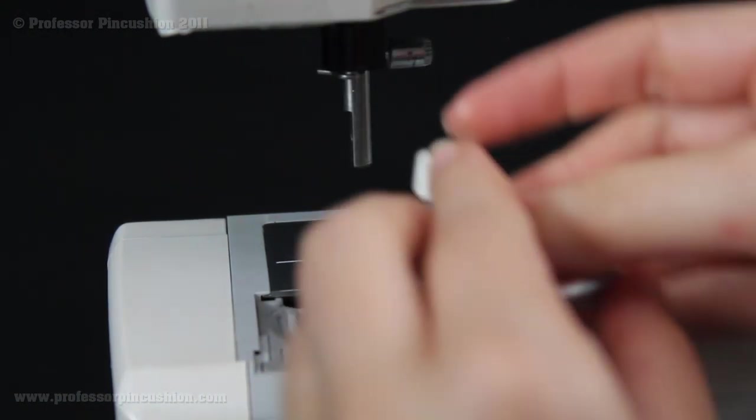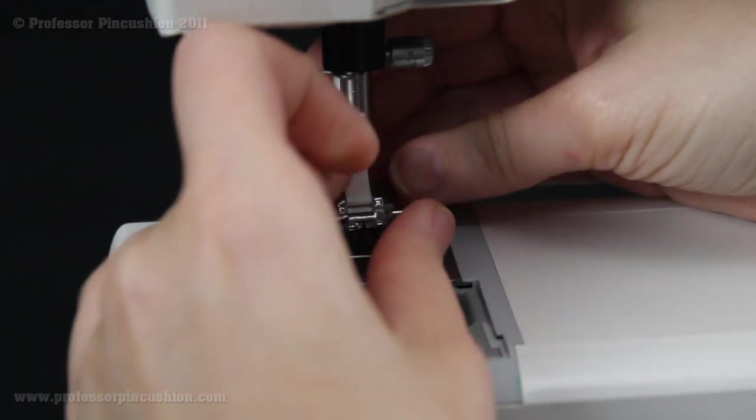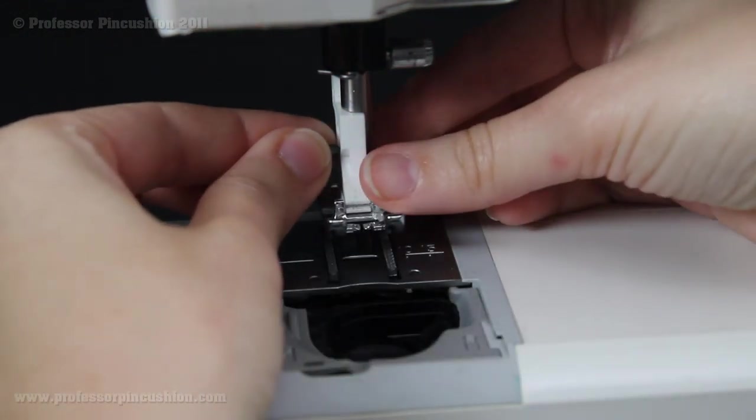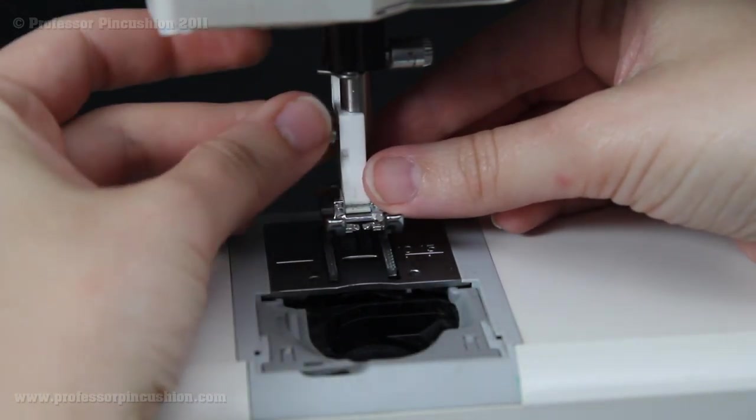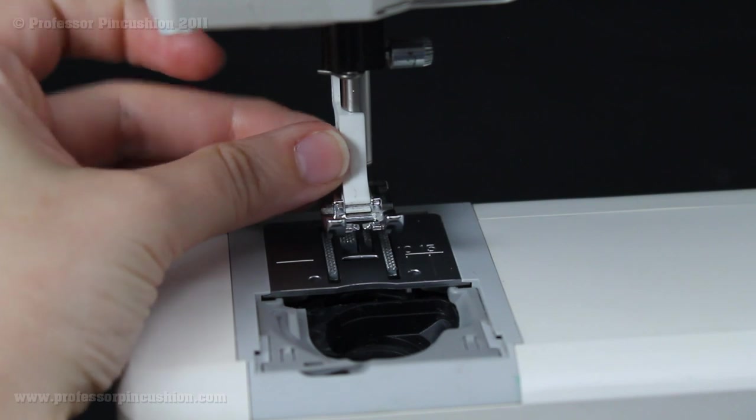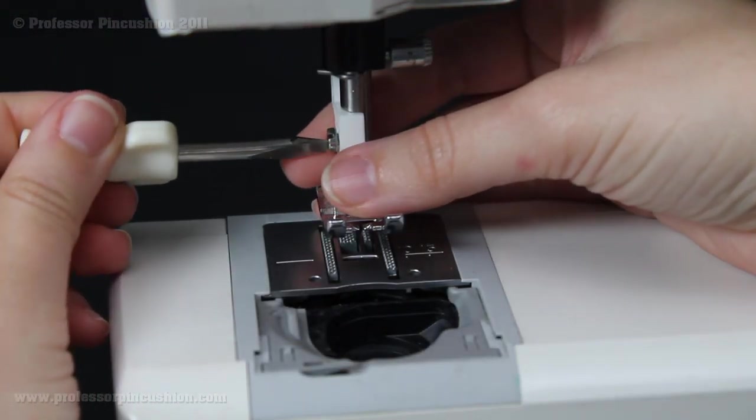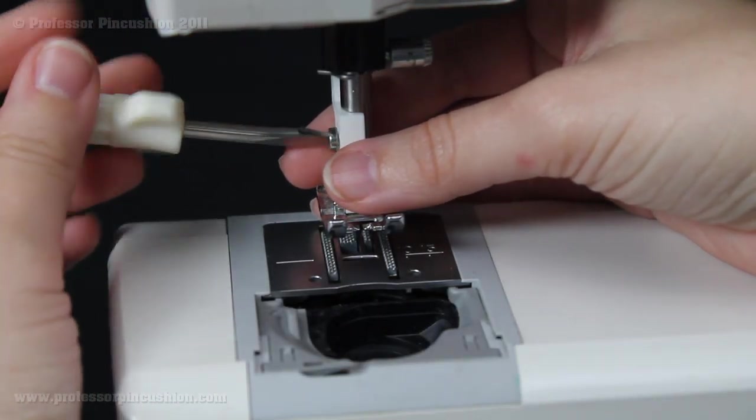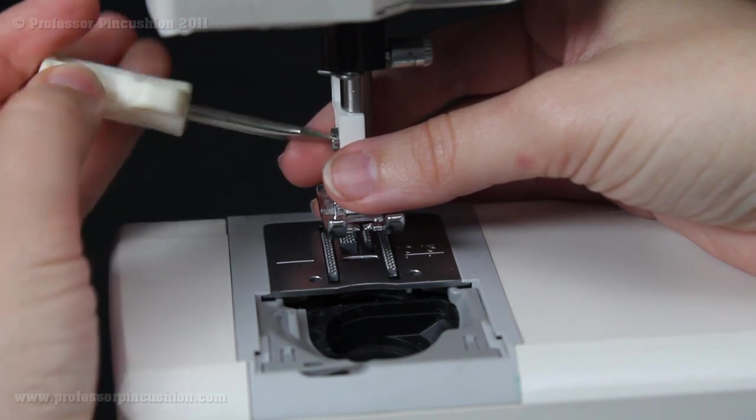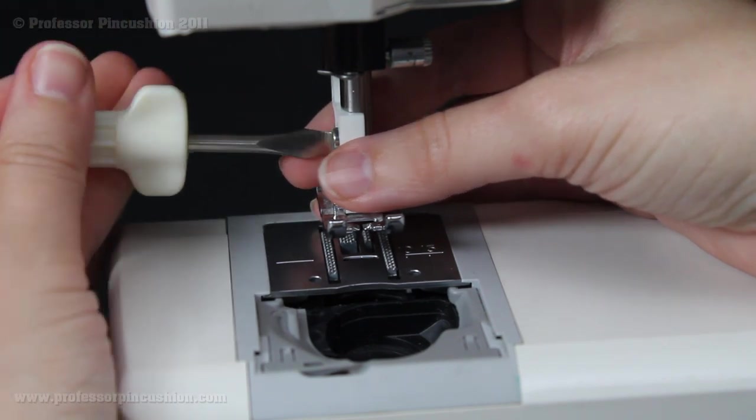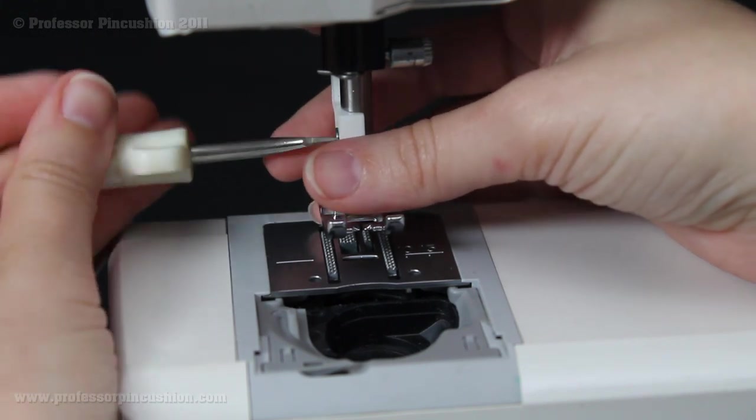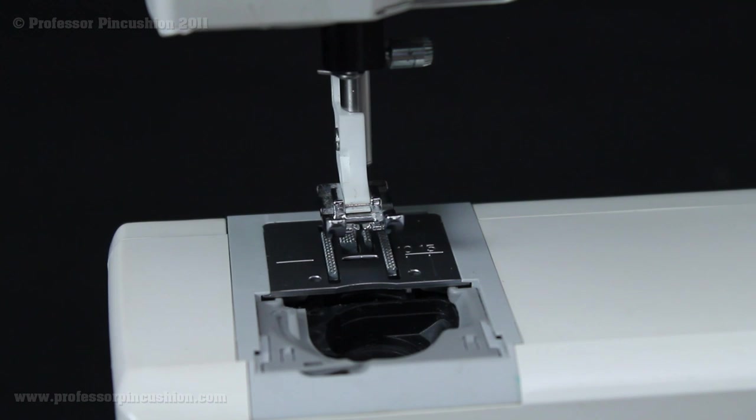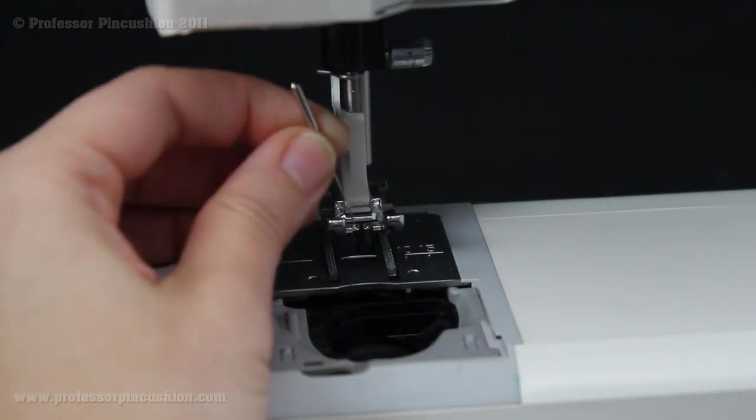I'm going to put the foot back on. And then I'm going to put the needle back in. But I would recommend starting fresh with a new needle whenever you do this cleaning. And depending on how often you use your machine, if you use it a lot you might want to do this once a month. If you just use your machine every once in a while maybe do it every couple of months. So new sewing machine needle goes right back in there.